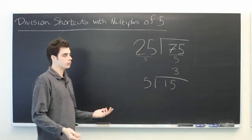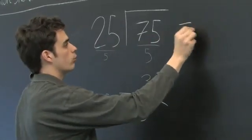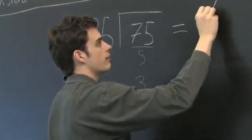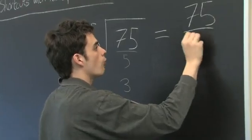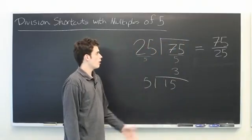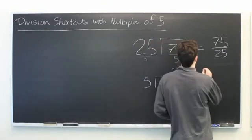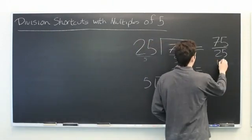So, why is this true? Why is this a valid technique? Well, if you rewrite this as 75 over 25 as a fraction, this is just simplification.